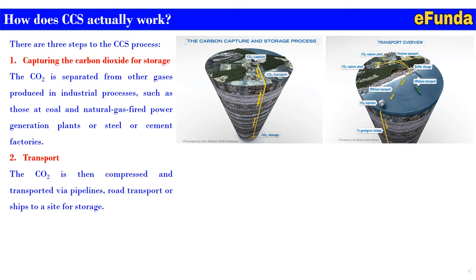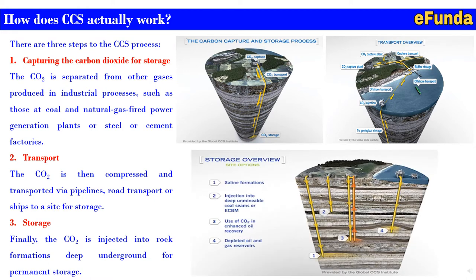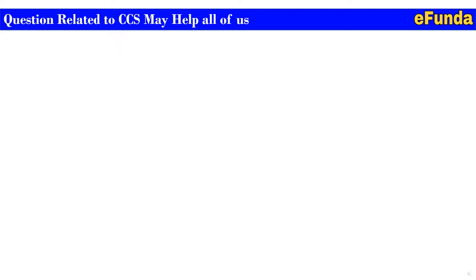Third, storage: the CO2 is injected into rock formations deep underground for permanent storage. Storage options include saline formations, injection into deep coal seams (ECBM), use of CO2 in enhanced oil recovery, and depleted oil and gas reservoirs. Thanks to the Global CCS Institute for the excellent picture illustrating this process.